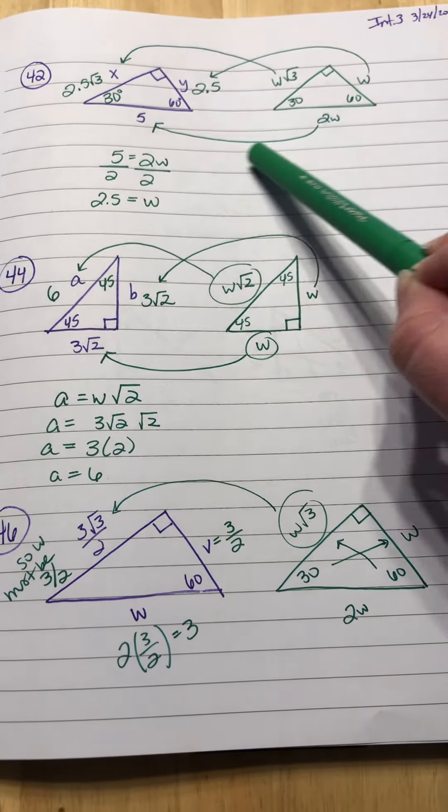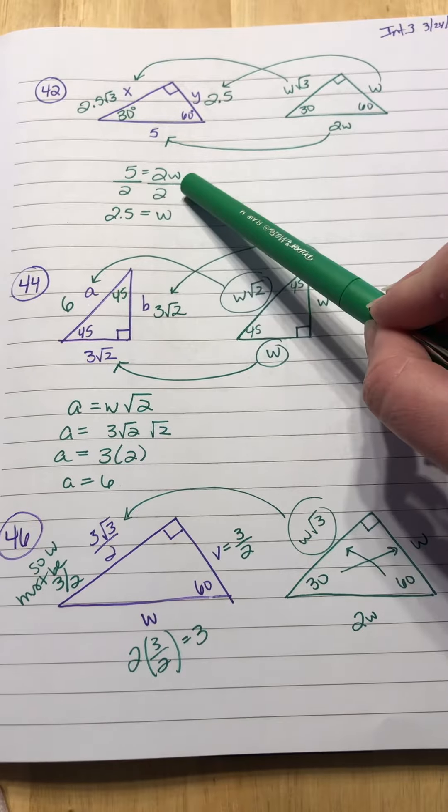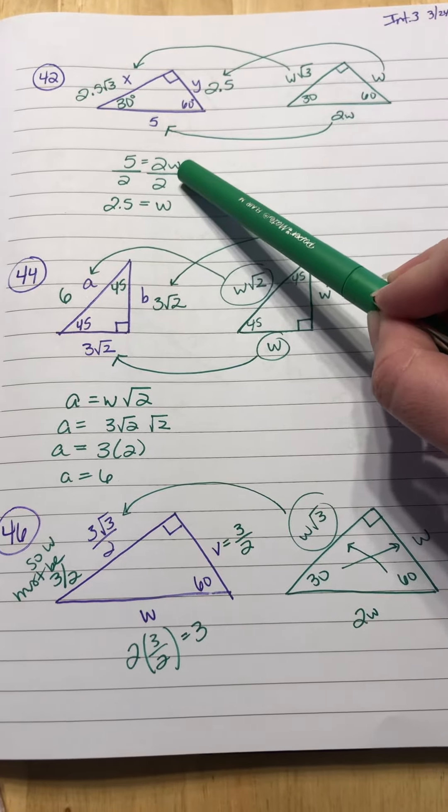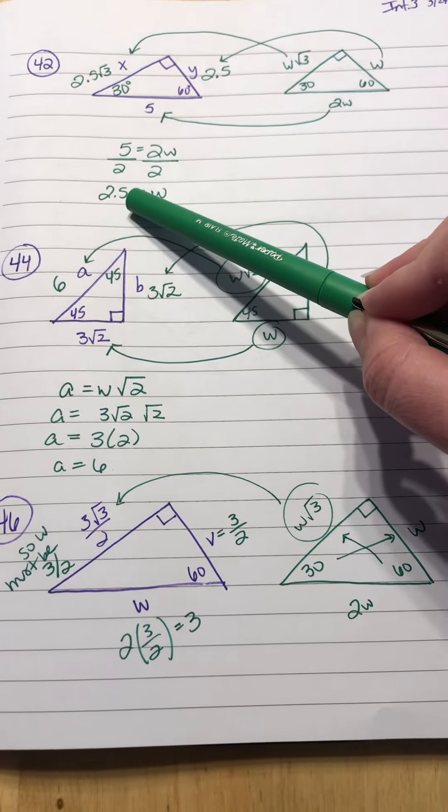So you know that the 2W goes with your 5 they gave you. So if you do 5 equals 2W and you solve for W, you're going to divide by 2 on both sides. So you get W equals 2.5.